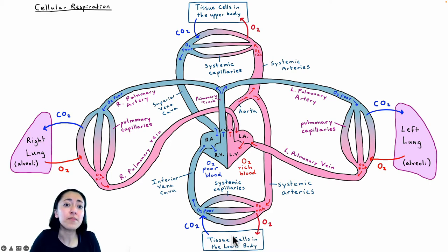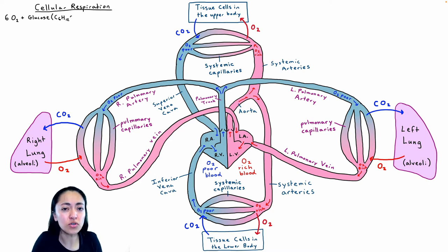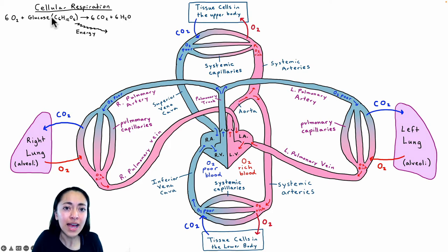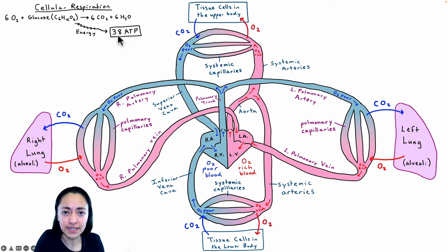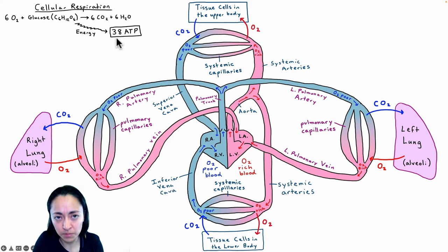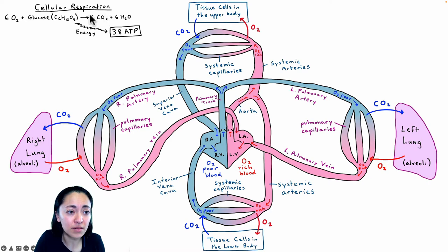Our tissue cells are always producing carbon dioxide, which is a waste product. Oxygen is used in a process known as cellular respiration, where oxygen and glucose are taken in by our tissue cells and converted into carbon dioxide and water. When glucose is broken down, as the bonds are being broken in that chemical, it releases energy used to make ATP — the usable form of chemical energy in our cells. For each glucose molecule broken down, we get about 38 ATP molecules made. In order to make this usable form of energy, our cells are constantly making carbon dioxide.